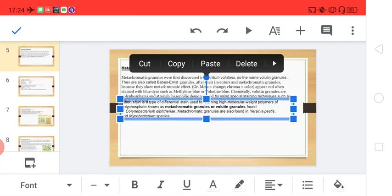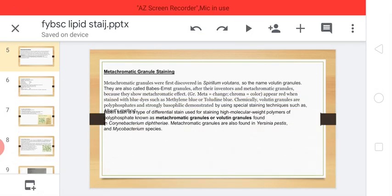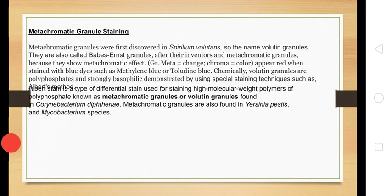Now we are going to learn about metachromatic granule staining. Metachromatic granules store inorganic phosphate. These metachromatic granules are highly acidic, and that is why they stain differently — the color of the stain changes. This property is called metachromasia.